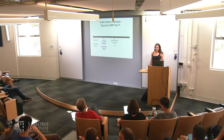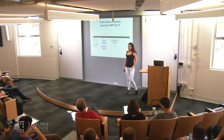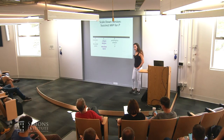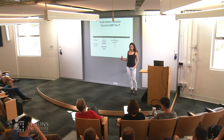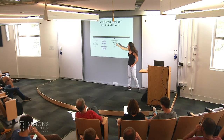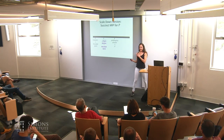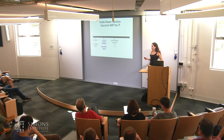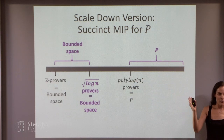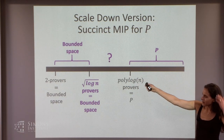The application to hardness of approximation: there may still be an application, because for hardness of approximation you only need constant soundness, not exponentially small soundness. This is a good open question. The gap became much smaller: for square root log n provers, we have bounded space; for poly log provers, it's P. The question is what's in between.